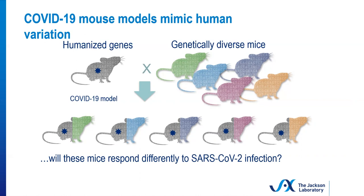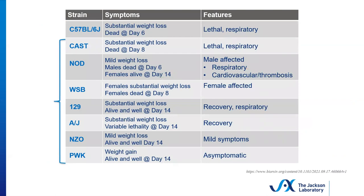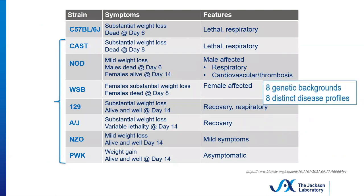In these studies, she's crossed C57 Black/6 wild-type mice with a variety of other mice to create an F1 generation that's 50% Black/6 and 50% of another mouse strain. This should be helpful to identify the genetic determinants of the diverse disease outcomes that we see in human populations. The question has to be asked: will these mice respond differently to the SARS-CoV-2 infection? The results are definitely encouraging. They took a look at eight genetic backgrounds with eight distinct disease profiles. Keep in mind the top row is 100% C57 Black/6J, and the subsequent rows are 50% Black/6 and 50% of the noted strain.